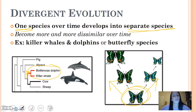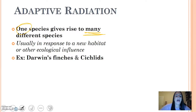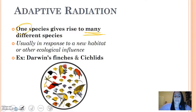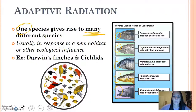Adaptive radiation is another version of divergent evolution, except this is where one species gives rise to many — more than two or three — usually in response to a new habitat or some ecological influence. Darwin's finches are the most popular example, as they all share a common finch ancestor from which their different beak shapes came. Cichlids are also an example — their lips are adapted to the type of food source they ate. And that is all for your second set of notes.